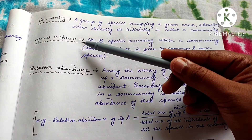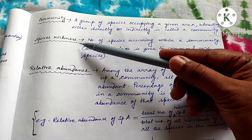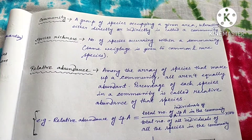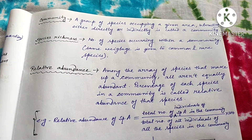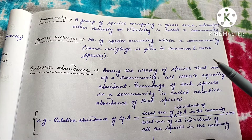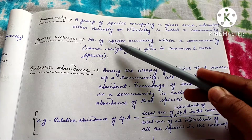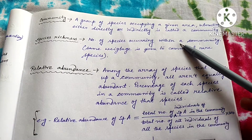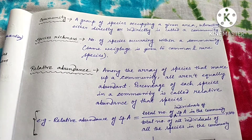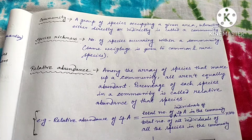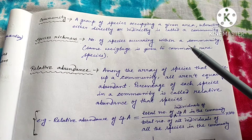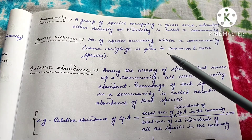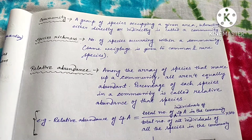Now coming to the next point: what is species richness? Species richness is the most simplest measure of species diversity in a community. It just accounts for the total number of species occurring within a community — the total number of species present in a community. It gives the same weightage to common and rare species, so there is no difference in weightage.